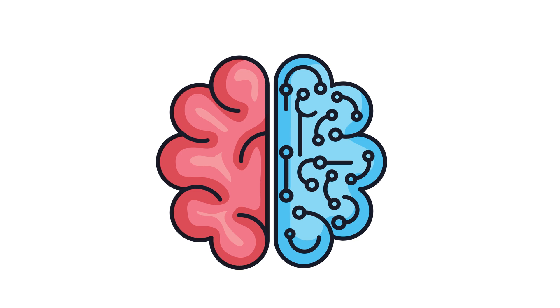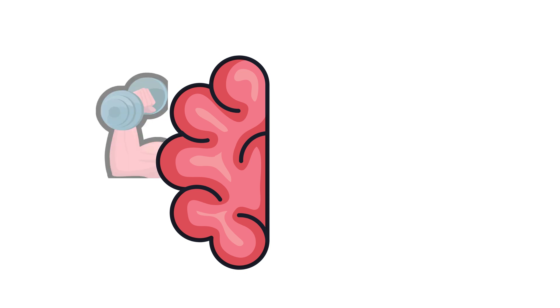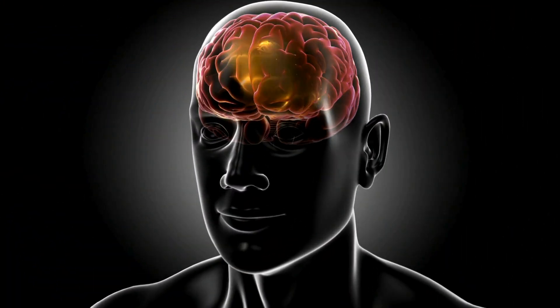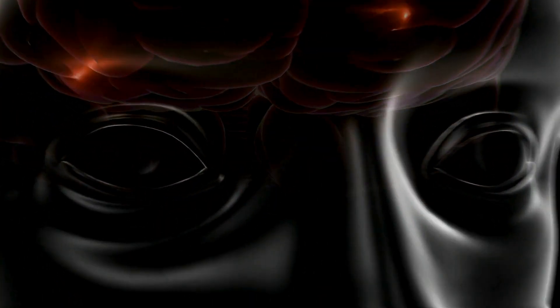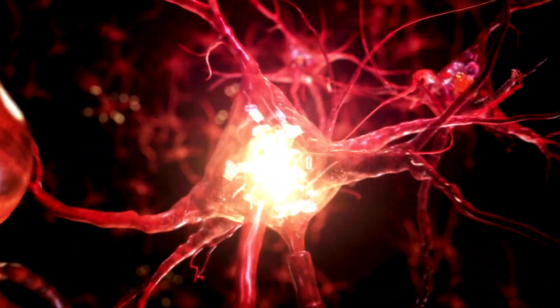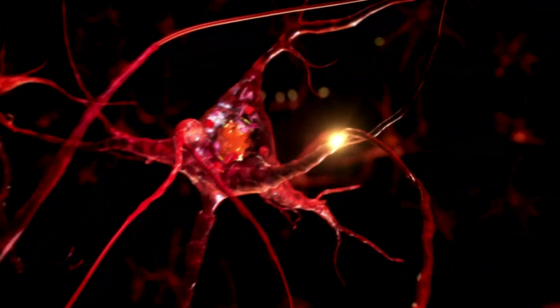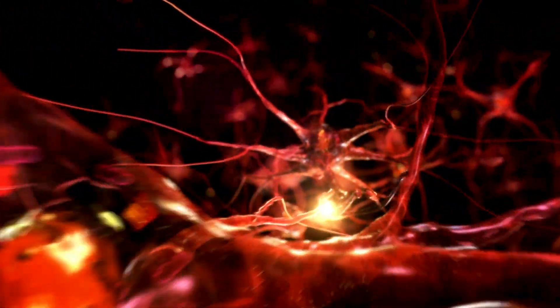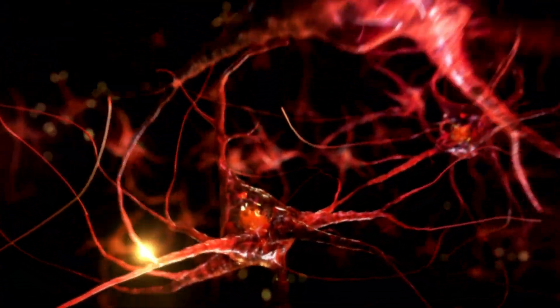Well, it turns out our brains are pretty darn resilient. When one hemisphere is removed, the remaining half steps up to the plate like a champ. It starts rewiring itself, taking on some of the tasks that were previously handled by its counterpart. And how exactly does that happen? It's a bit complex, but essentially, when one hemisphere of the brain is removed, the remaining hemisphere begins to reorganize its neural connections. This process involves neurons forming new pathways and connections to compensate for the tasks that were once managed by the removed hemisphere.